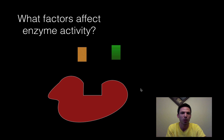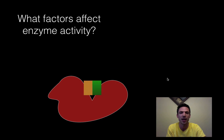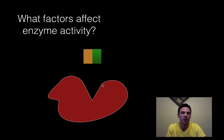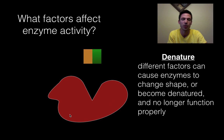What happens if I change the shape? What if factors cause a change in the shape of my enzyme? So now instead of a square, let's say it's more triangular. Now my substrate that matches with this doesn't match — when it tries to bind, it's not going to work and we can't get the chemical reaction to take place. What we call this — when we change the shape of our enzyme — is denaturing the enzyme. To denature an enzyme means to change its shape. Different factors can cause enzymes to change shape, become denatured, and no longer function properly. Anything that denatures my enzyme is going to slow down its ability to work.